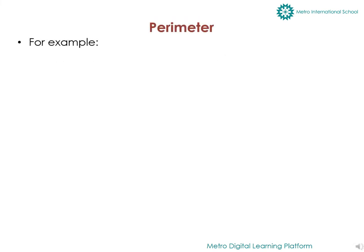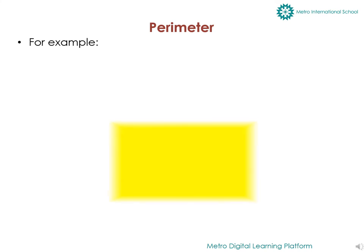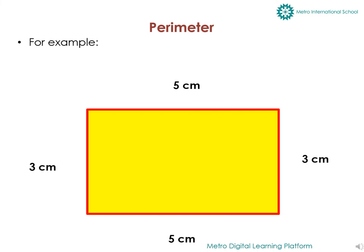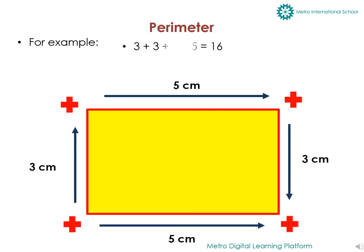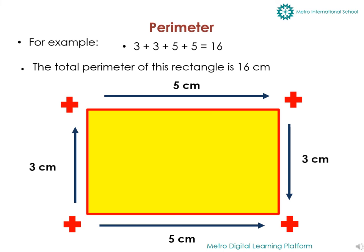For example, this is my rectangle and these sides are 3 cm and the other sides are 5 cm. So we are going to write it like this: 3 plus 3 plus 5 plus 5. We write 3 and 5 twice because there are 2 sides of my rectangle that are 5 cm and 2 sides that are 3 cm. When we add, the total is 16, so the total parameter of this rectangle is 16 cm.